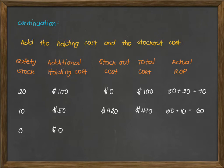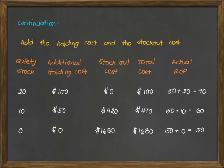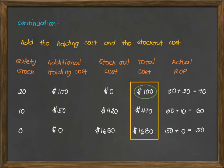For a safety stock of 0, there is no additional holding cost. However, the stock out cost is $1,680, making the total cost also $1,680, and we maintain the reorder point at 50 units. Assessing our total cost column, we should choose the option with the least cost, which is $100 — and that is by keeping 20 units of safety stock. So we shift our actual reorder point to 70 units.